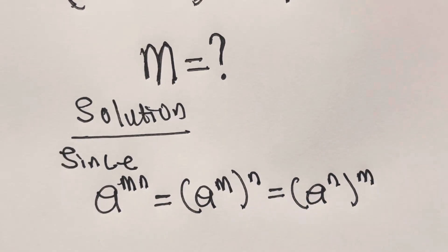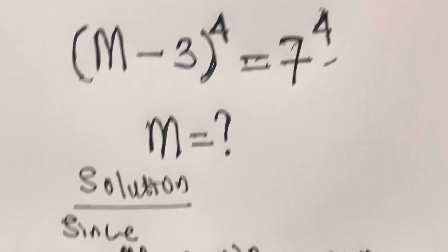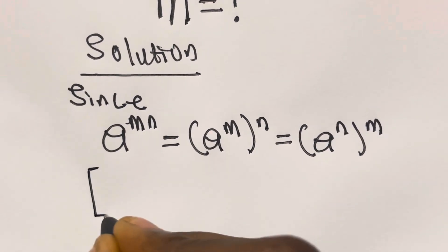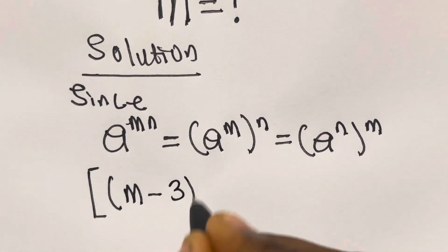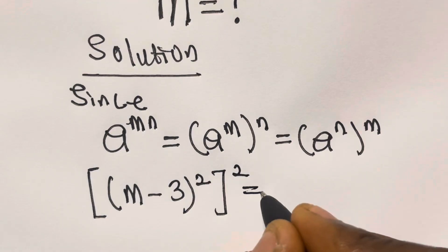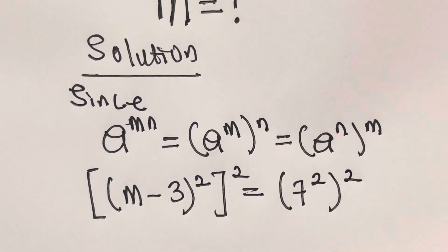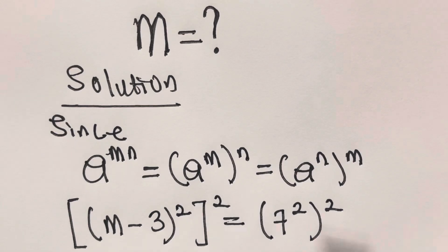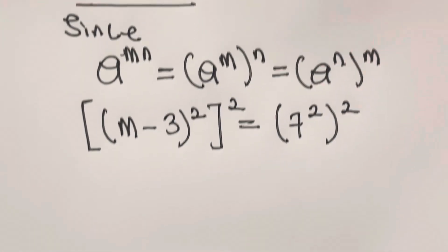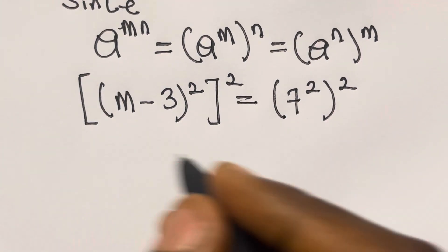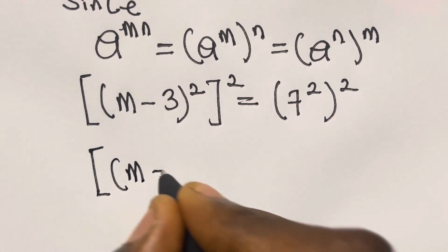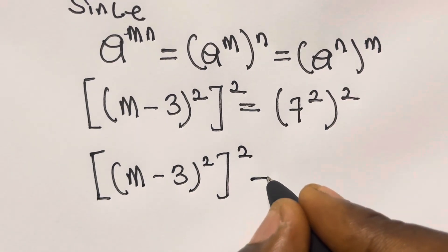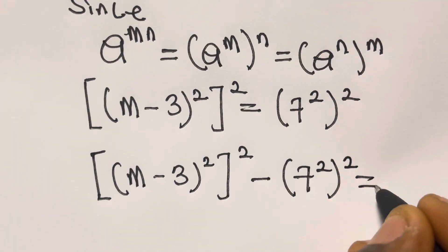We will apply this rule to our equation. We rewrite (m minus 3) to the power 4 as [(m minus 3) squared] raised to power 2, and similarly 7 to the power 4 as [7 squared] raised to power 2, because 2 times 2 gives us 4. Transferring the right side, we get [(m minus 3) squared] minus [7 squared] raised to power 2 equals zero.